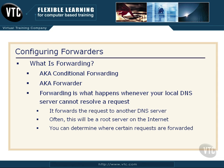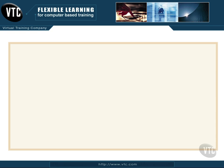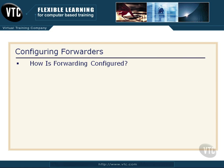But here is the dirty little secret: you can determine where certain requests are forwarded. You don't have to go to the root server. You can designate a server as a forwarder and tell it which requests to send to a specific authoritative server. There is a difference between straight up forwarding and conditional forwarding, and I'll show you that in just a few minutes.